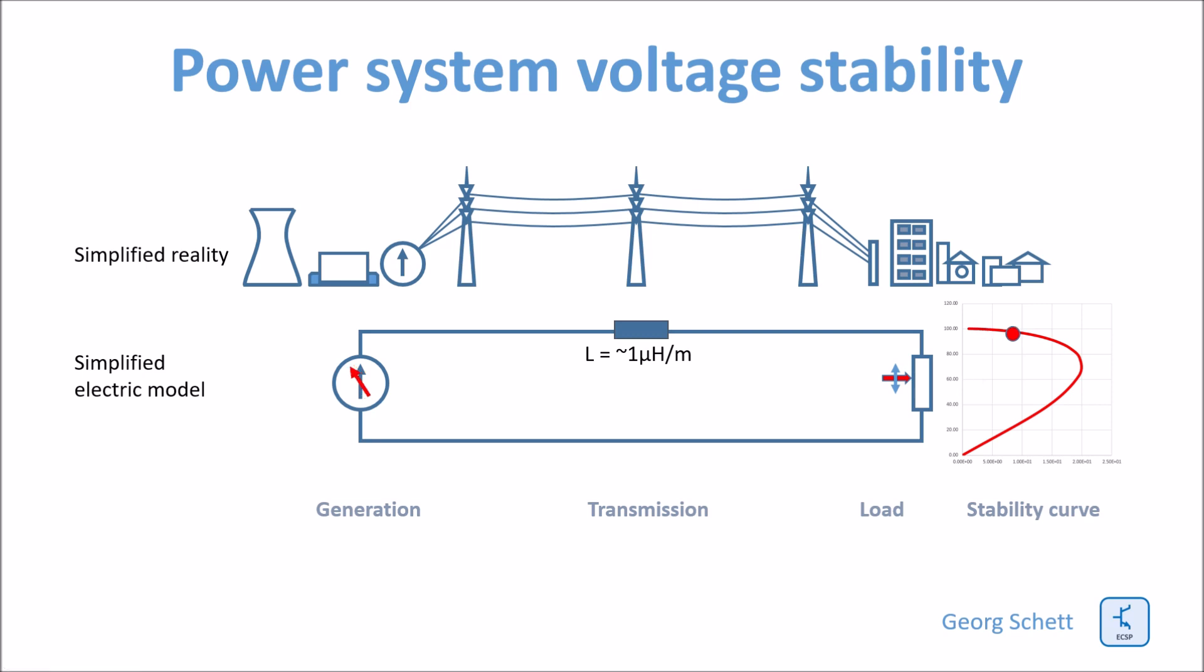So when I increase the load, I reduce the voltage. You see that there will be more and more voltage drop across the line. Therefore, the curve will approach a tipping point, and above the tipping point, the voltage will collapse.